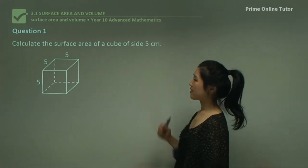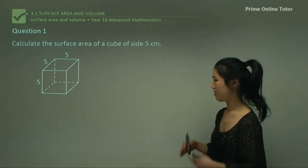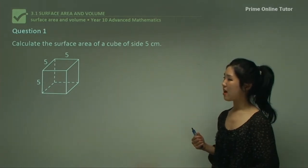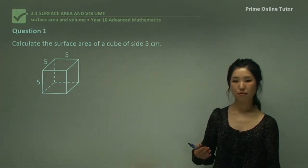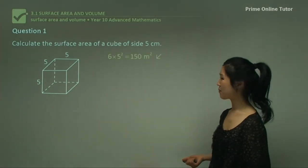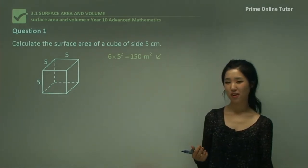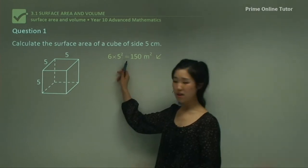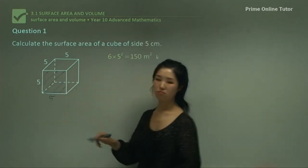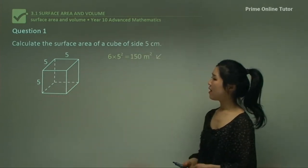Question 1 says: calculate the surface area of a cube of side 5 centimetres. This is like a square prism, but we call it a cube. How many faces does a cube have? It has 6 identical sides. So the surface area is going to be 6 times 5 squared, and that's the solution. For those wondering why 5 squared — the area of each square face is simply 5 times 5, so we multiply that by 6.